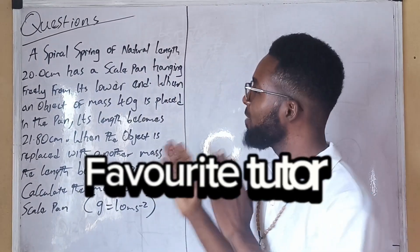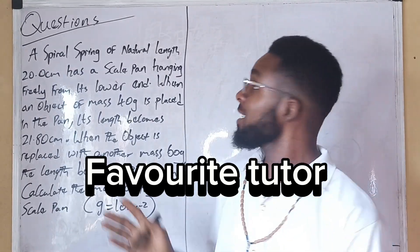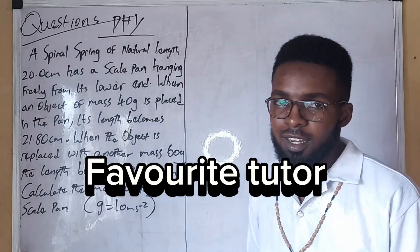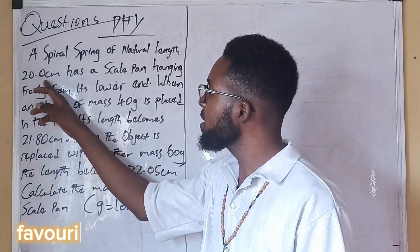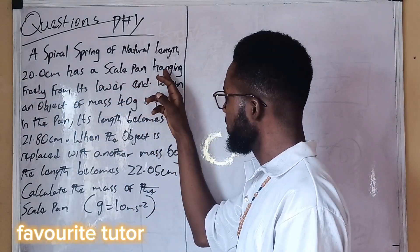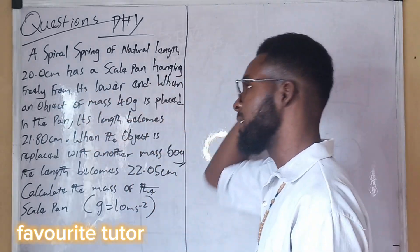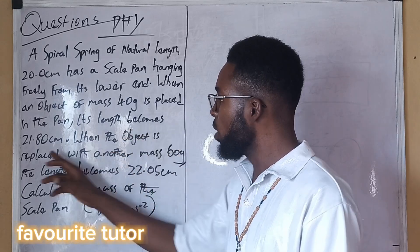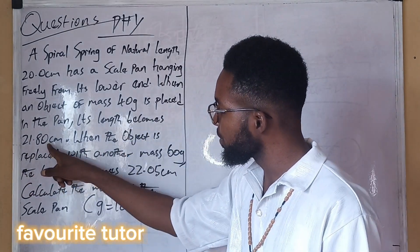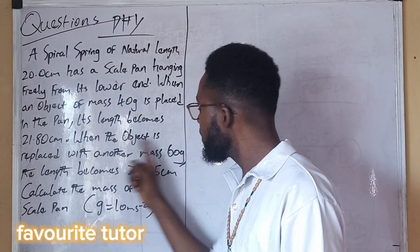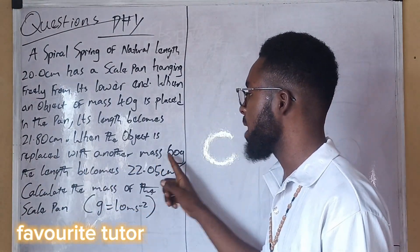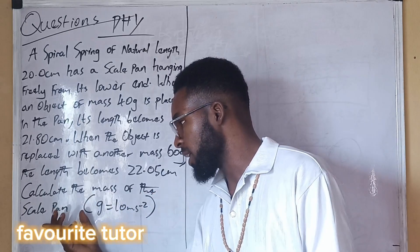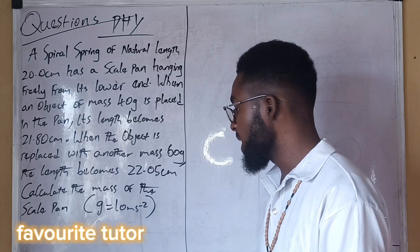Welcome back to another episode. Today I have a question on the board — this is on physics. A spiral spring of natural length 20 centimeters has a scale pan hanging freely from its lower end. When an object of mass 40 grams is placed in the pan, its length becomes 22.8 centimeters. When the object is replaced with another mass of 60 grams, the length becomes 22.05 centimeters. Calculate the mass of the scale pan. We are taking g as 10 meters per second squared.